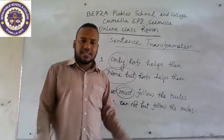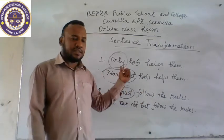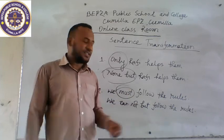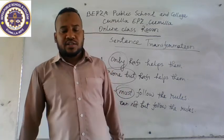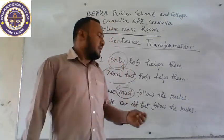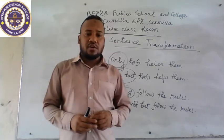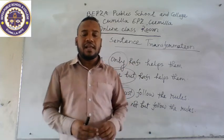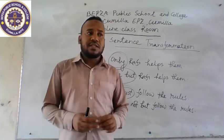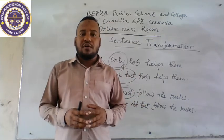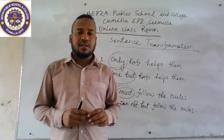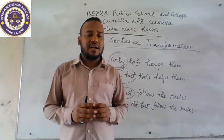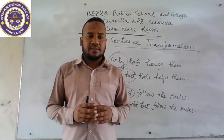All students should understand these points. If you get 'only,' use 'none but' when it denotes a person. If you get 'must,' it turns into 'cannot but.' All students, practice at home and follow the rules from your textbooks. Next class, I will discuss more rules on how to transform affirmative to negative. I hope all students stay healthy and stay at home. Till then, take care.